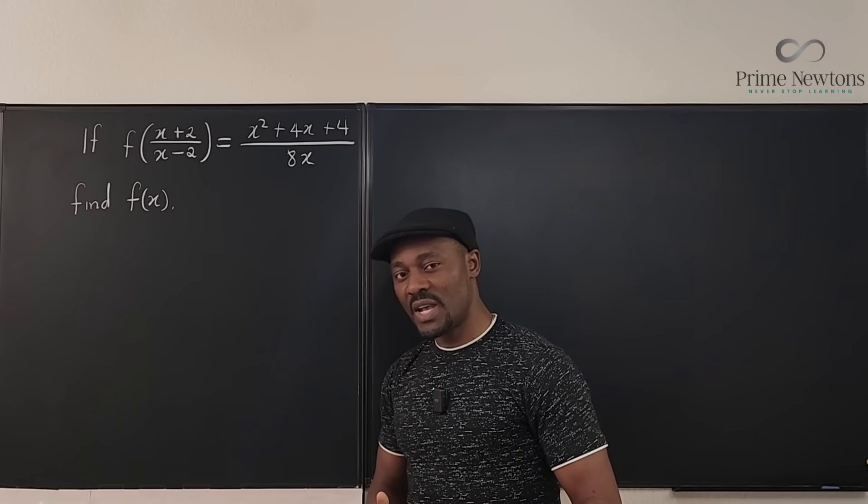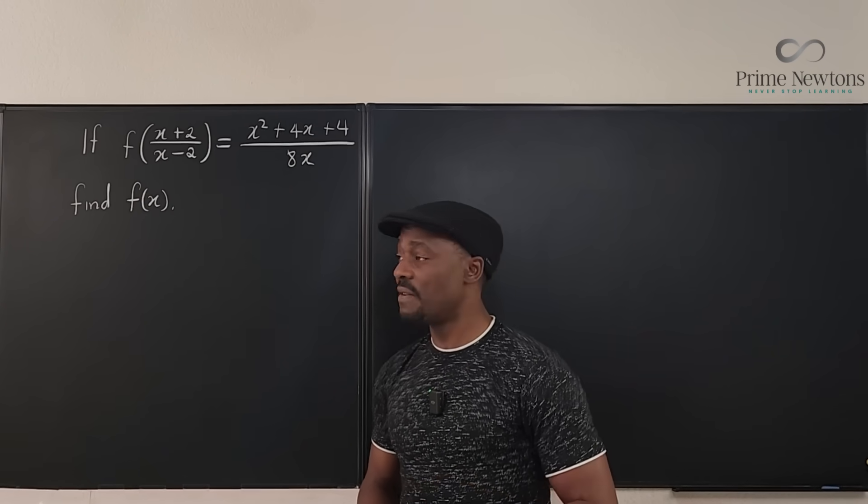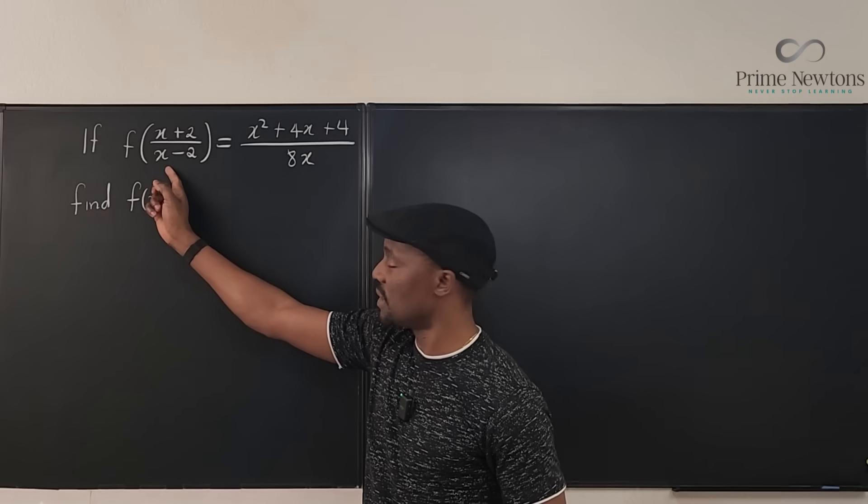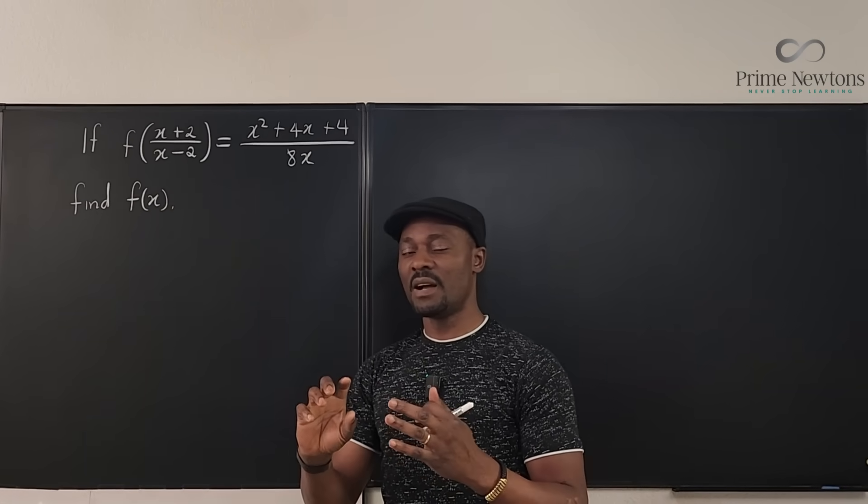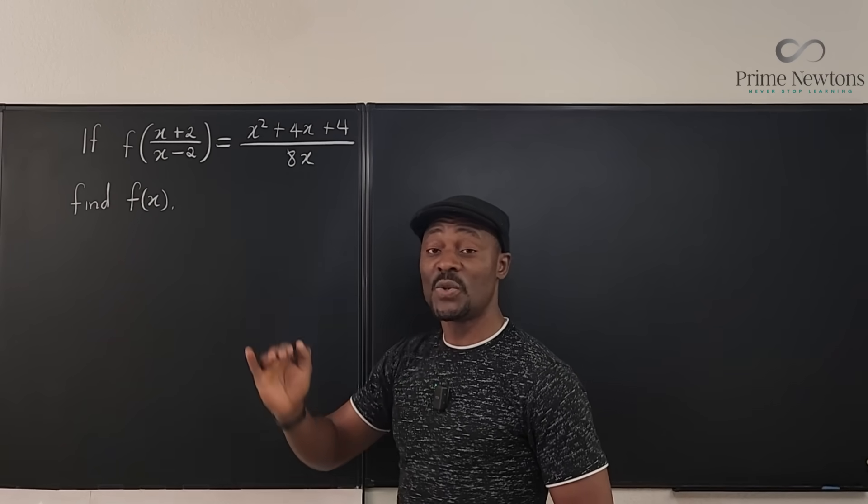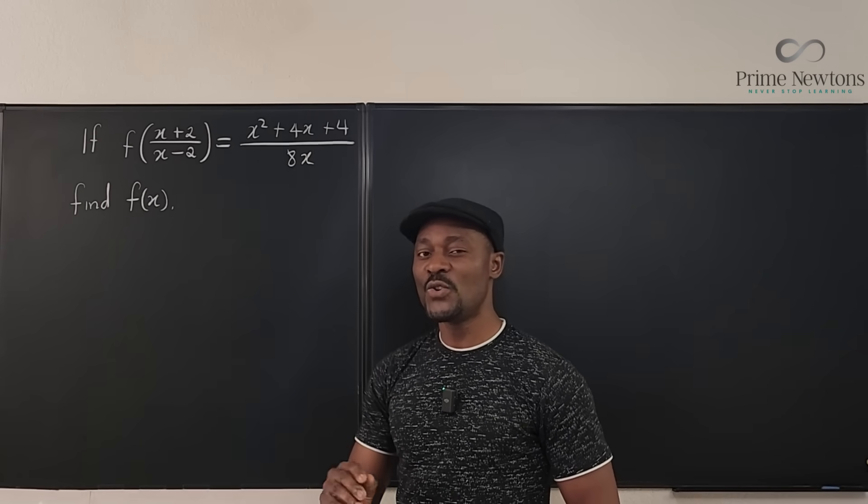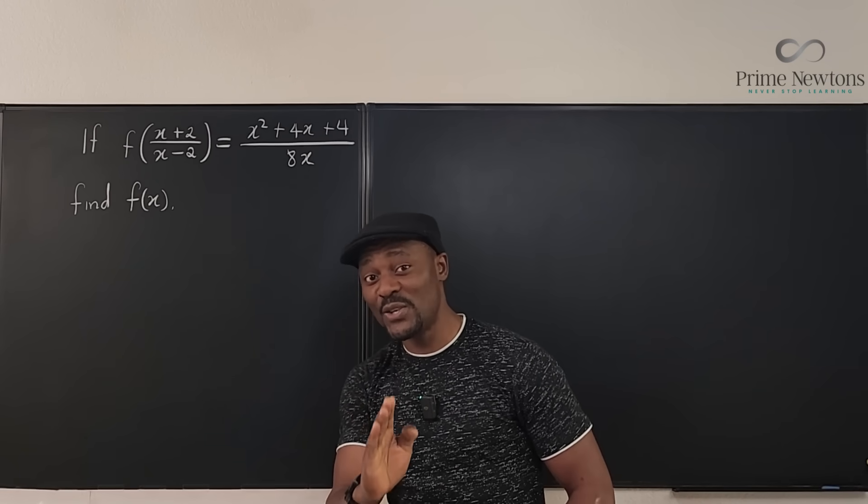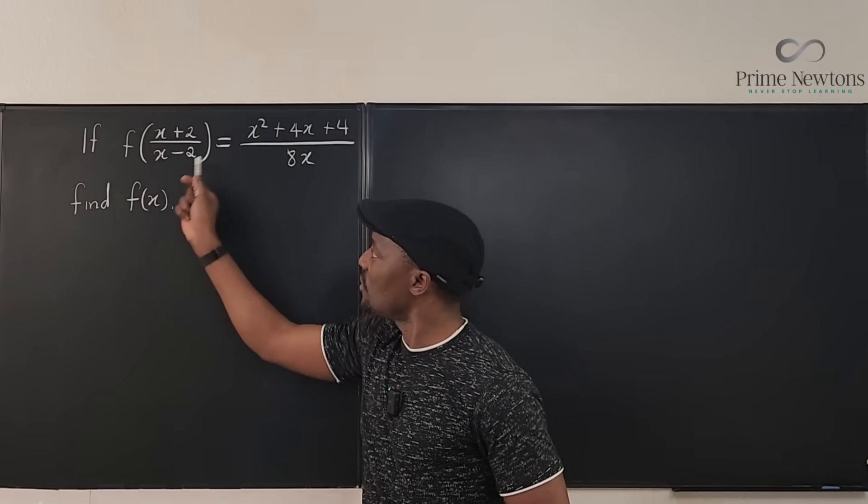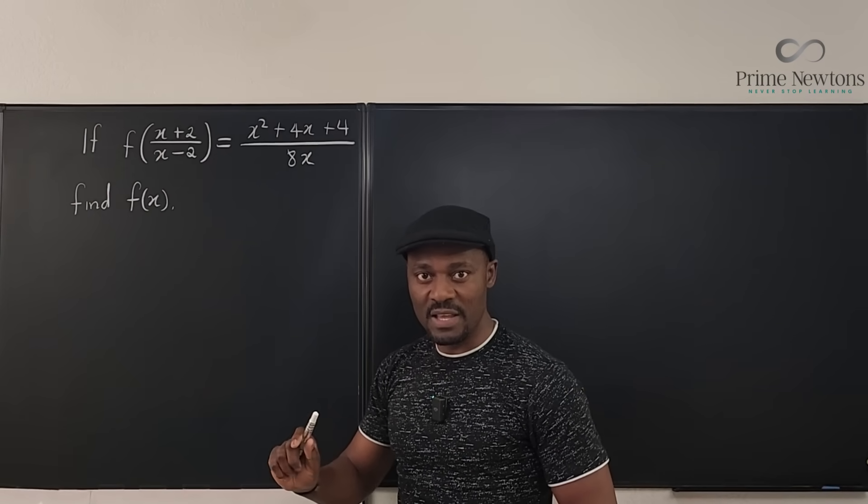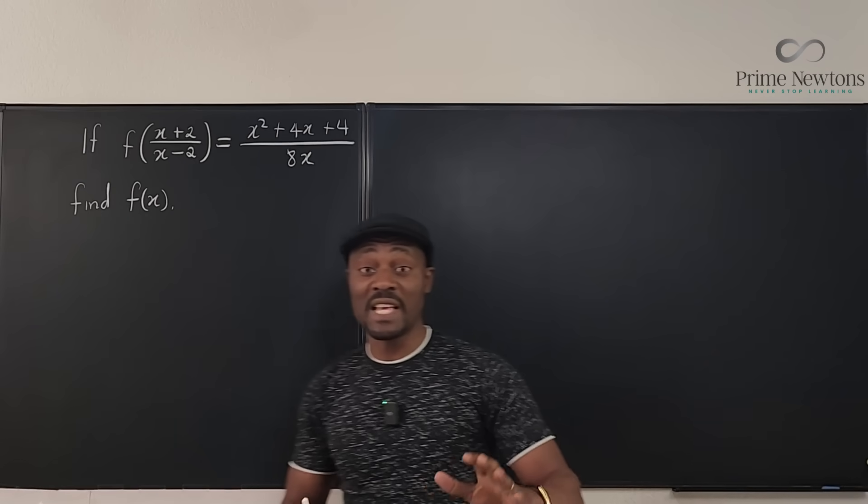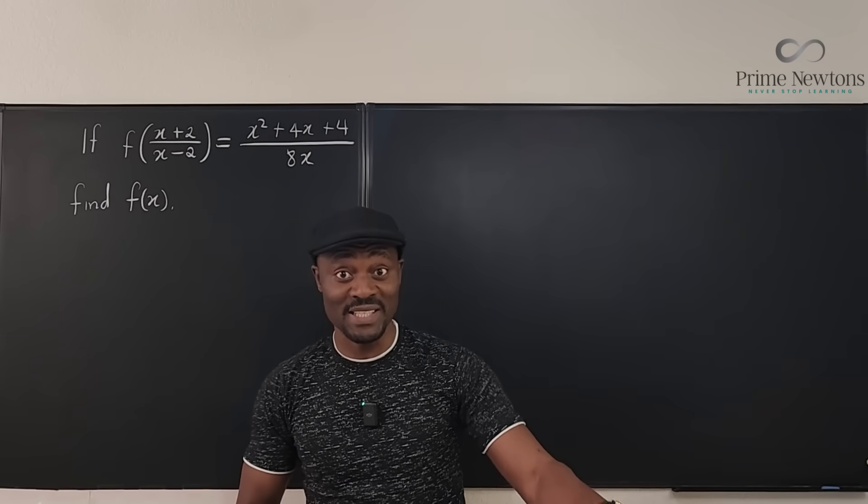Here is my suggestion. Whenever you get a functional equation, if it is just one single function involved in it like this one, try to plug in a very convenient number and see what you get on the right-hand side so that when you get your final answer, you can test it and see how it works. I would say I want to make this equal to zero. So when this is zero, I want to know what's going to happen on this side because when I get my answer it's easy to plug in zero.